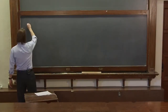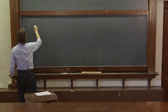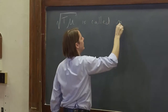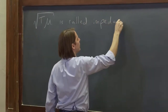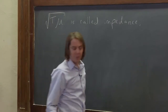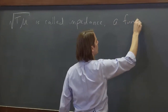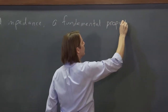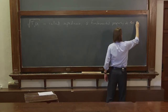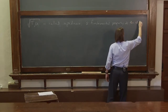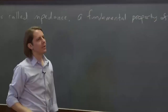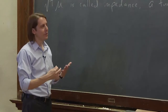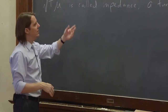This property — the square root of tension times mass density of the string — is called the impedance of the string, and it is a fundamental property of the string. Just like mass density and tension come together to tell you the velocity of a wave in the string, you can combine them a different way and you get this thing called the impedance.